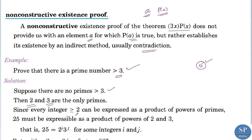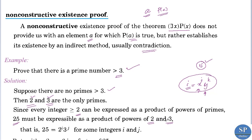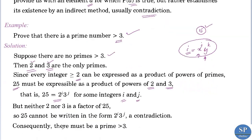Since every integer greater than or equal to 2 can be expressed as a product of powers of primes, any integer i can be expressed as x power j times y power k, where x and y are primes. So if we take the integer 25, it must be expressible as a product of powers of 2 and 3 — because by assumption those are the only primes. That is, 25 can be expressed as 2 to the power i times 3 to the power j for some integers i and j. But we know that 25 is not divisible by 2 or 3.